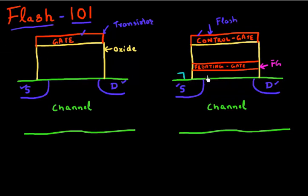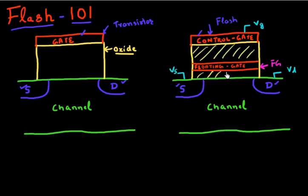The reason it's called floating is because there's no direct access to this gate. For a normal transistor, there's always a terminal which connects to your source, drain, and gate, and you can directly apply voltage to it. But for this floating gate, there's no direct electrical contact available. Also, it's surrounded by oxide material, which is insulating, so there's no leakage path between the floating gate and the source, drain, or control gate. That's why this electrode is called the floating gate.